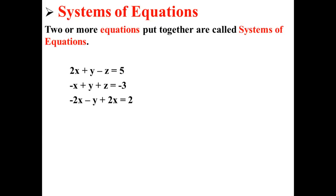Here, we have a system of equations that has three variables. 2x plus y minus z is equal to 5. Negative x plus y plus z is equal to negative 3. And negative 2x minus y plus 2x is equal to 2.